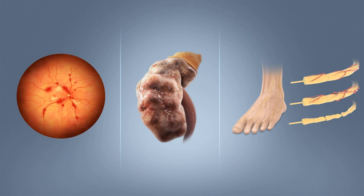Low blood sugar is common in people with type 1 and type 2 diabetes. Most cases are mild and are not considered medical emergencies. Effects can range from feelings of unease, sweating, trembling, and increased appetite in mild cases to more serious effects such as confusion, changes in behavior such as aggressiveness, seizures, unconsciousness, and permanent brain damage or death in severe cases.